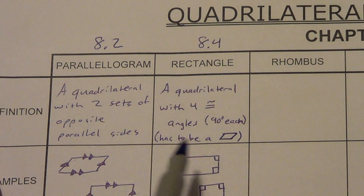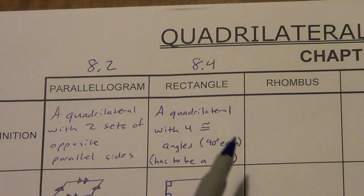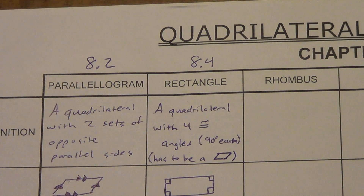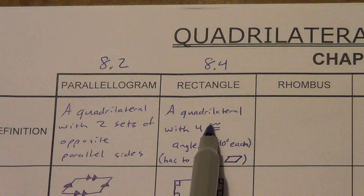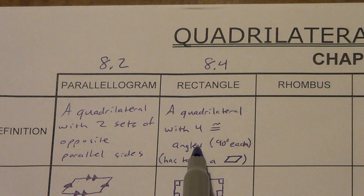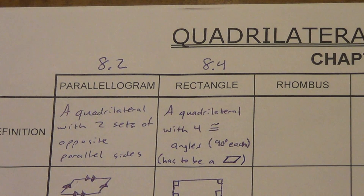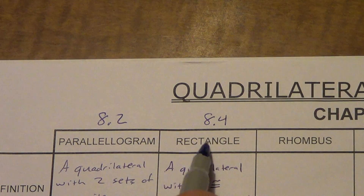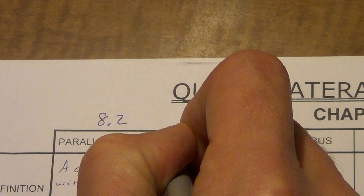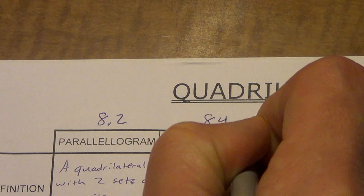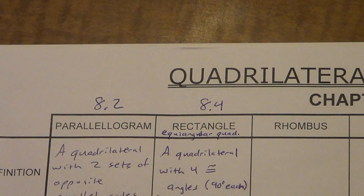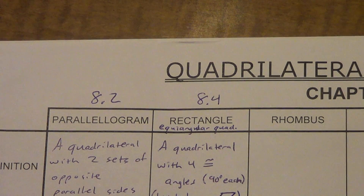We can actually define a rectangle in just two words. Think about it — four congruent angles means all congruent angles. What do all congruent angles mean? Equiangular. So we could say a rectangle is an equiangular quadrilateral. That's a two-word definition of a rectangle.